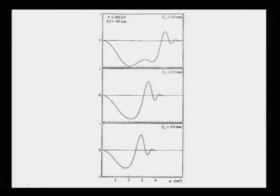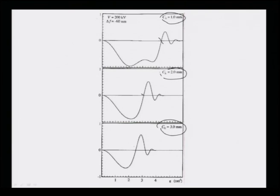One can see the effect of the spherical aberration constant on the transfer function. As shown, when I change the spherical aberration constant Cs from 1 to 3 millimeters, the transfer function changes drastically. For Cs equal to 1 mm, the transfer function has a very large width before the first zero, but as Cs increases, this zero slowly moves to lower values of G, meaning fewer spatial frequencies can be transferred.